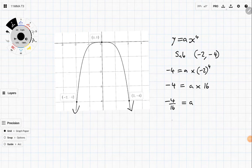So we get -4 = a × 16, which gives us -4/16 = a. That simplifies to a = -1/4, so y = (-1/4)x⁴.